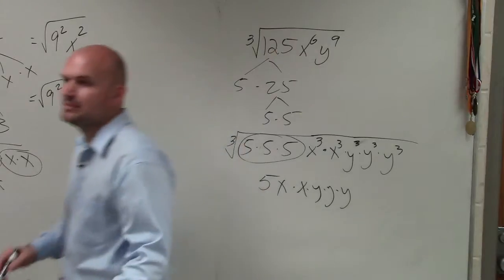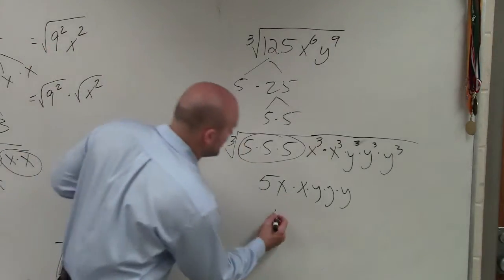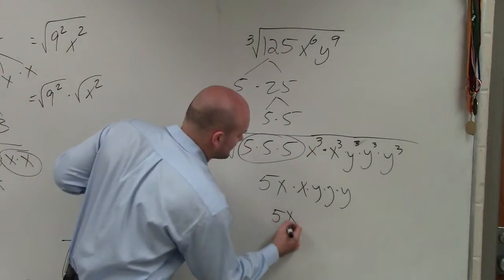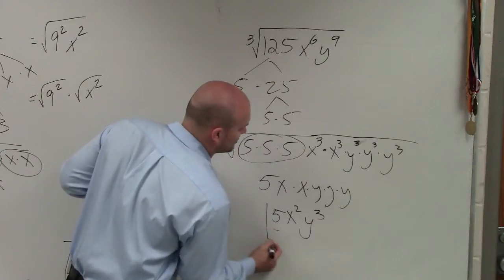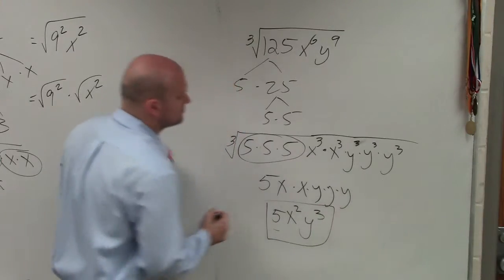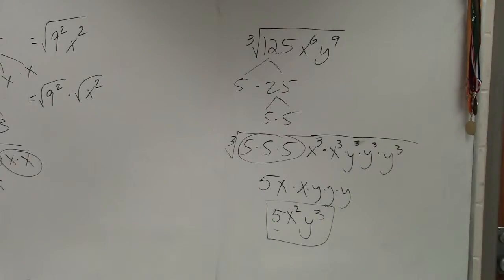So now I can simplify: x times x gives me x squared, and y times y times y gives me y cubed. Can you just simplify the x in the radical by the index and then get the same root? Yep — that would be using the power rule.